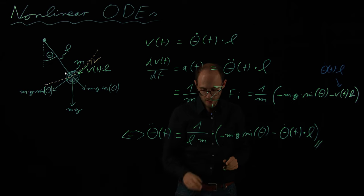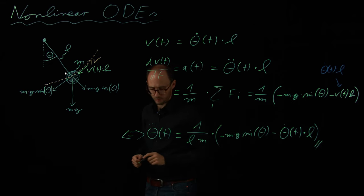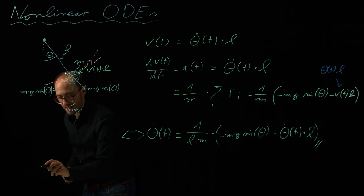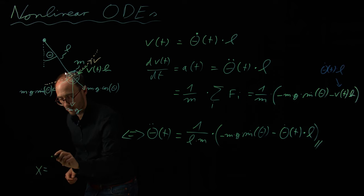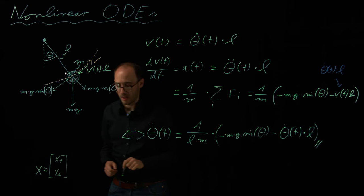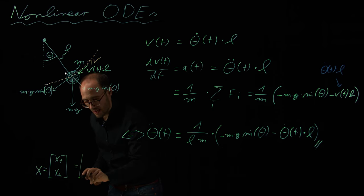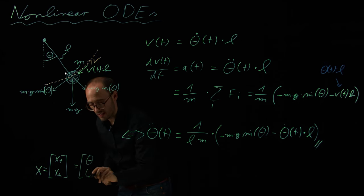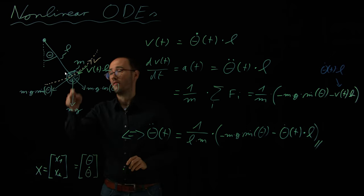From this now I can basically build a very simple state space model or non-linear state space model. And I say, okay, my state x has two components, x1, x2. And I'm just omitting here the time index for sake of compactness. And I define that the first state should be just theta, so the absolute angle displacement. And the second state should be theta dot, so the angular velocity.